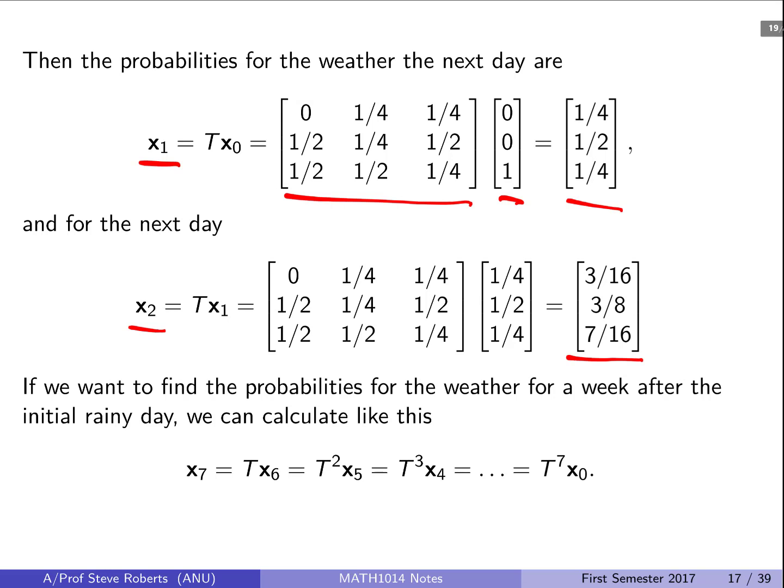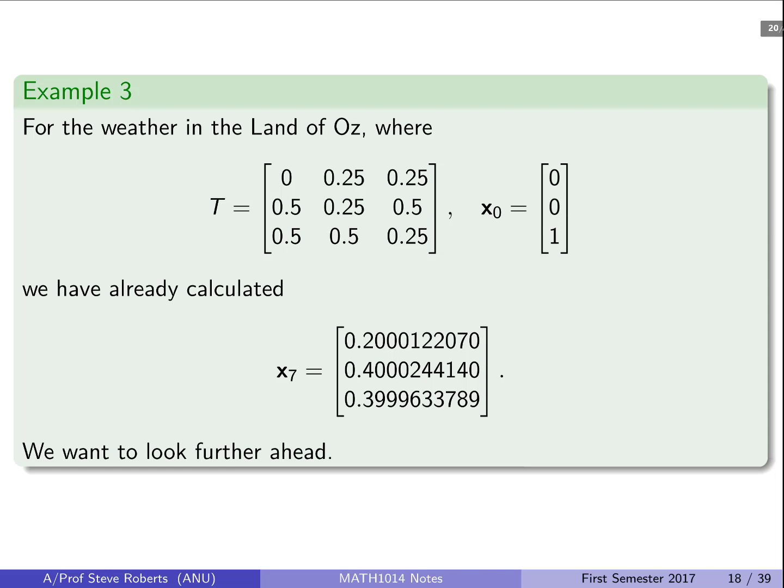And then we'd like to know what happens, say, at the end of the week. So using this model we could work out what the weather is at the end of the week from the weather at the start of the week by just multiplying the transition matrix raised to the seventh power.